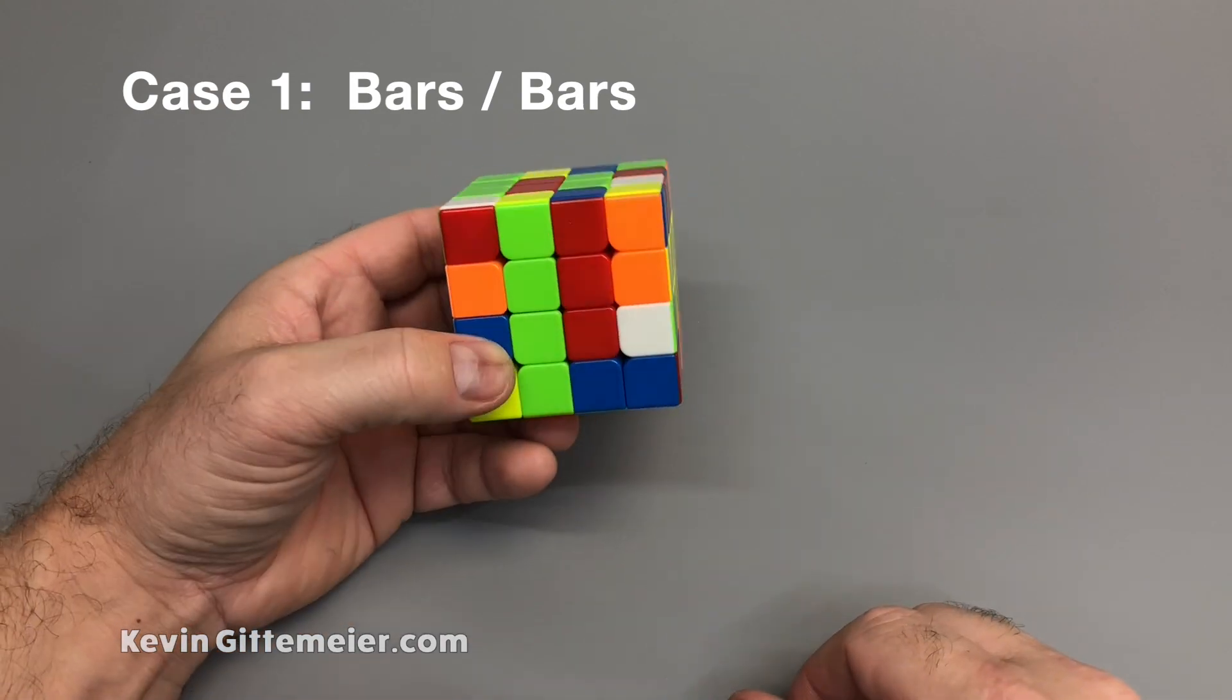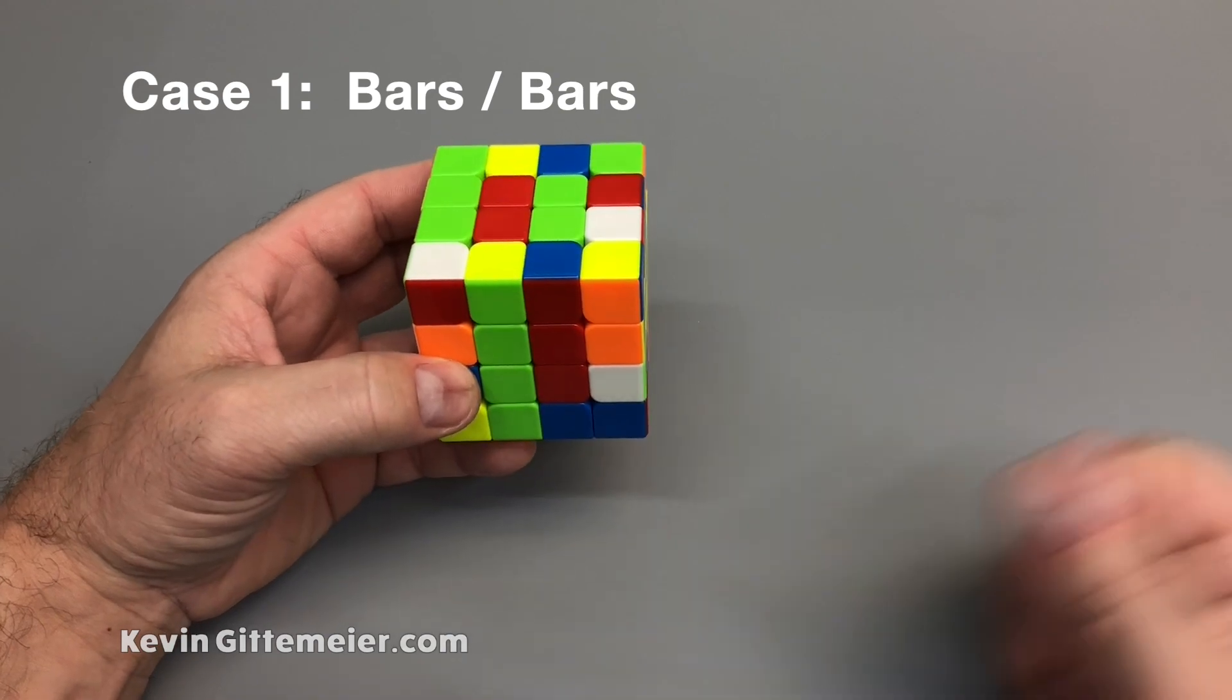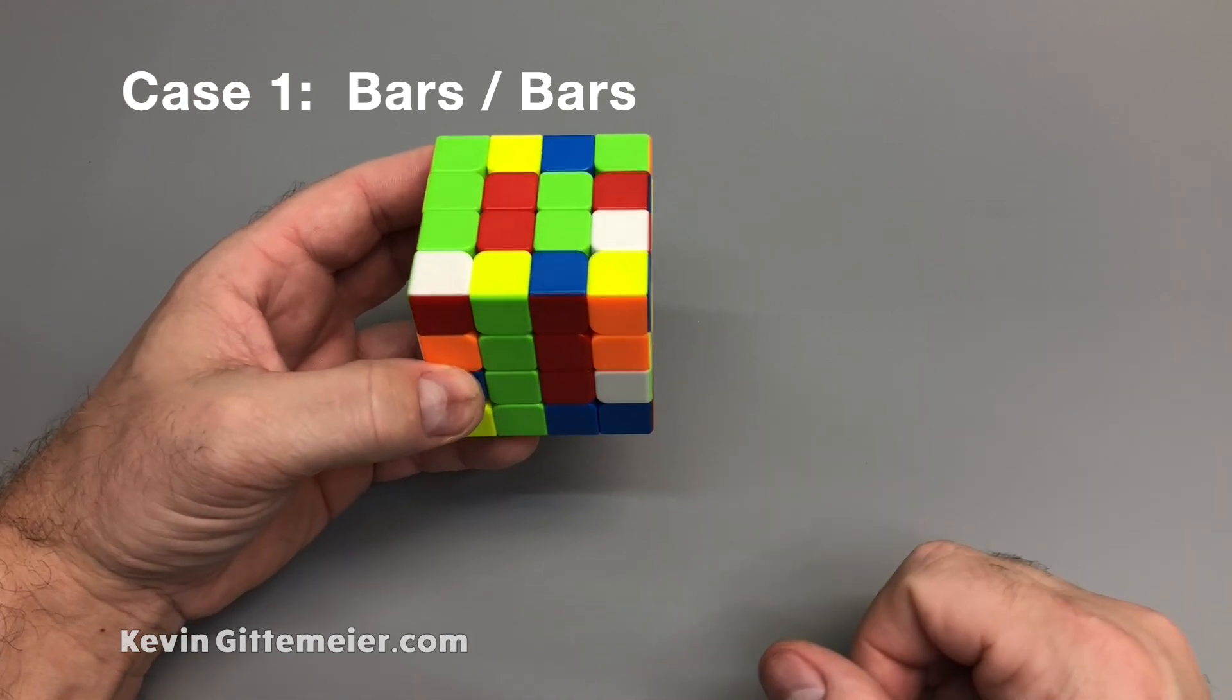Case 1, Bars/Bars. This is the easiest and most logical to solve as the bars are already solved. We just have to join them together to solve the centers.